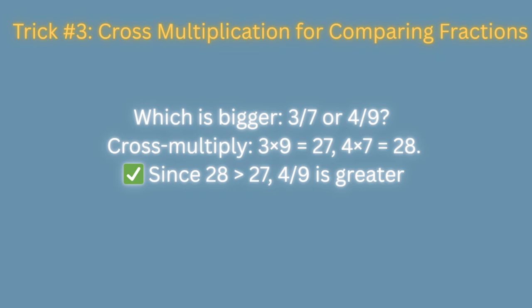Trick number 3: Compare fractions fast. Which is bigger, 3 divided by 7 or 4 divided by 9? Let's cross multiply. 3 multiply by 9 is equal to 27 and 4 multiply by 7 is equal to 28. Since 28 is greater than 27, so 4 divided by 9 is greater.